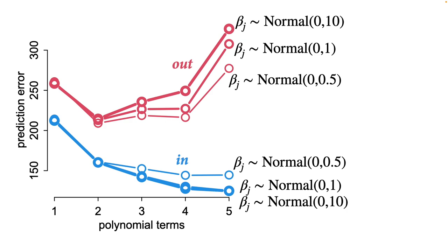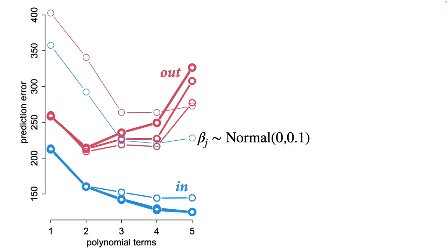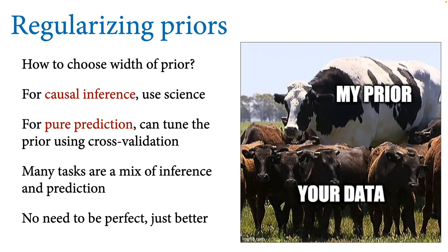You can make priors too tight. With normal(0,0.1) priors, both in-sample and out-of-sample prediction get quite worse — the sample size is too small and these priors are too constraining. The model is extremely skeptical; if you fed it more data it would eventually overcome this skepticism, but for this sample size it's too tight.